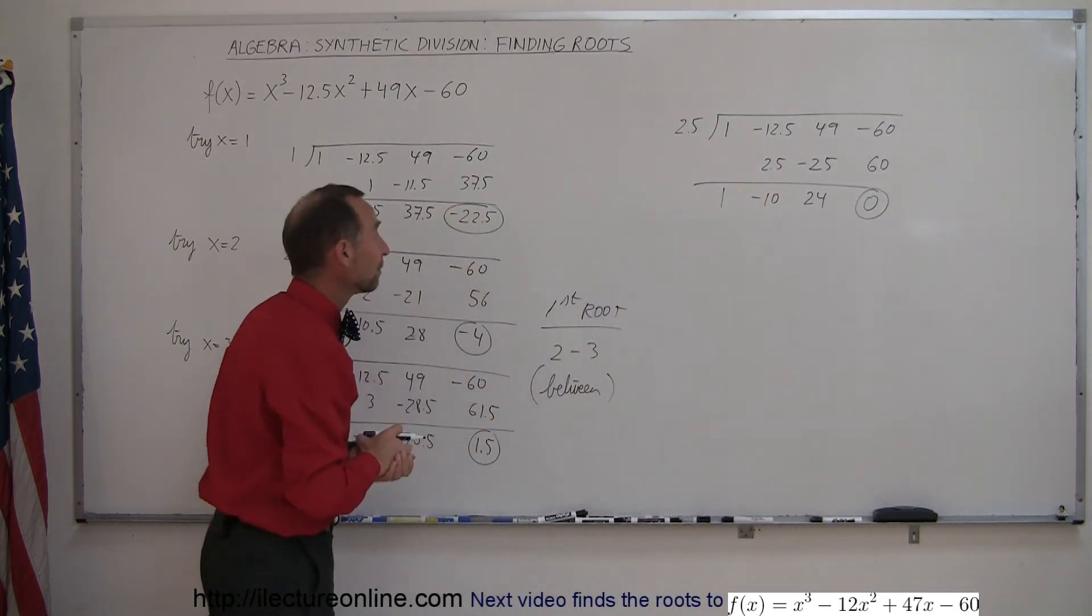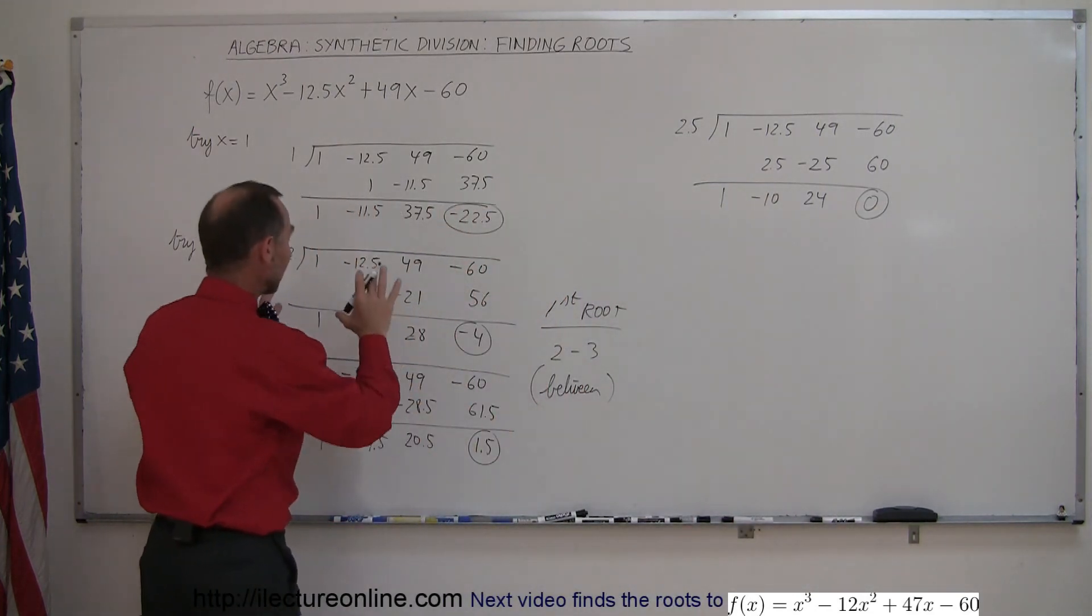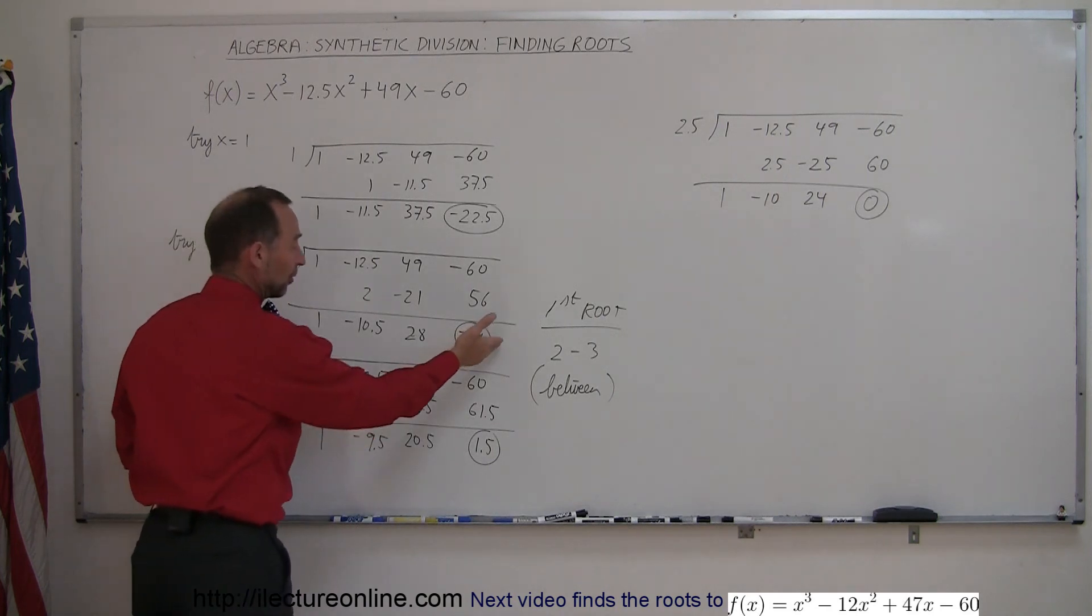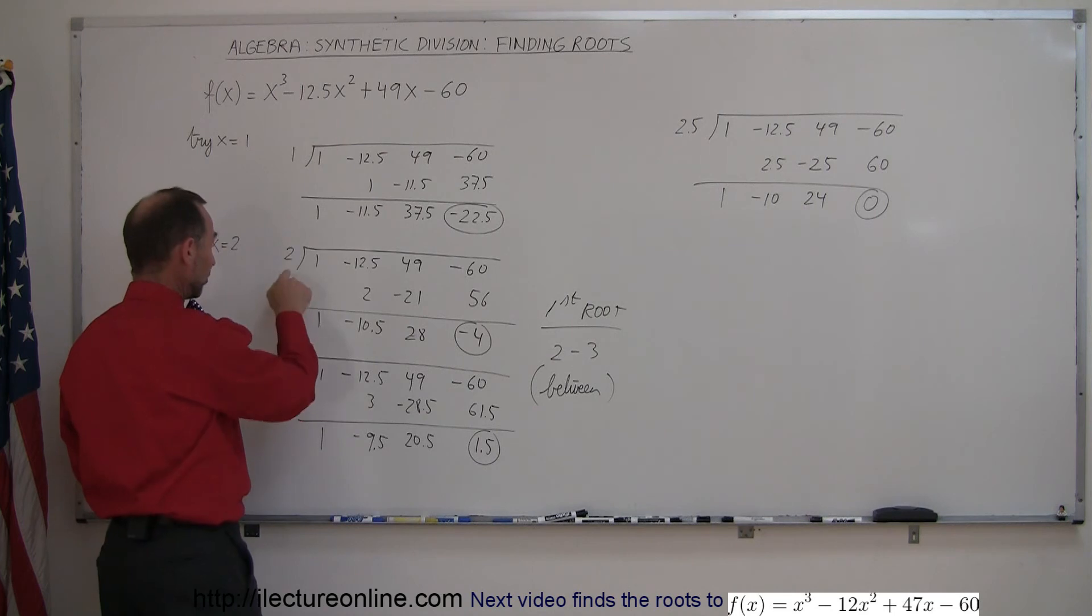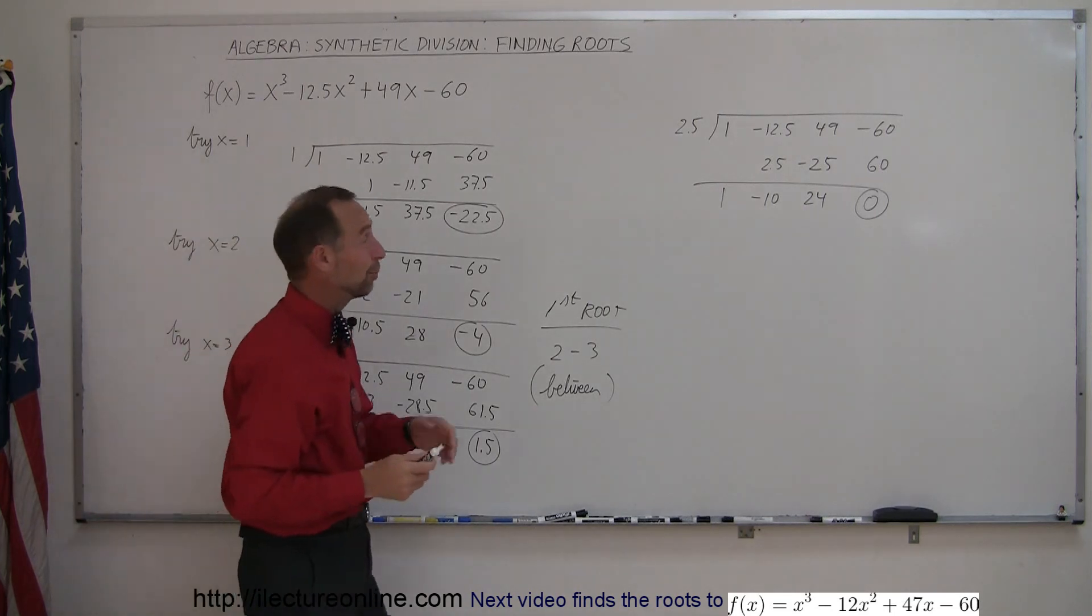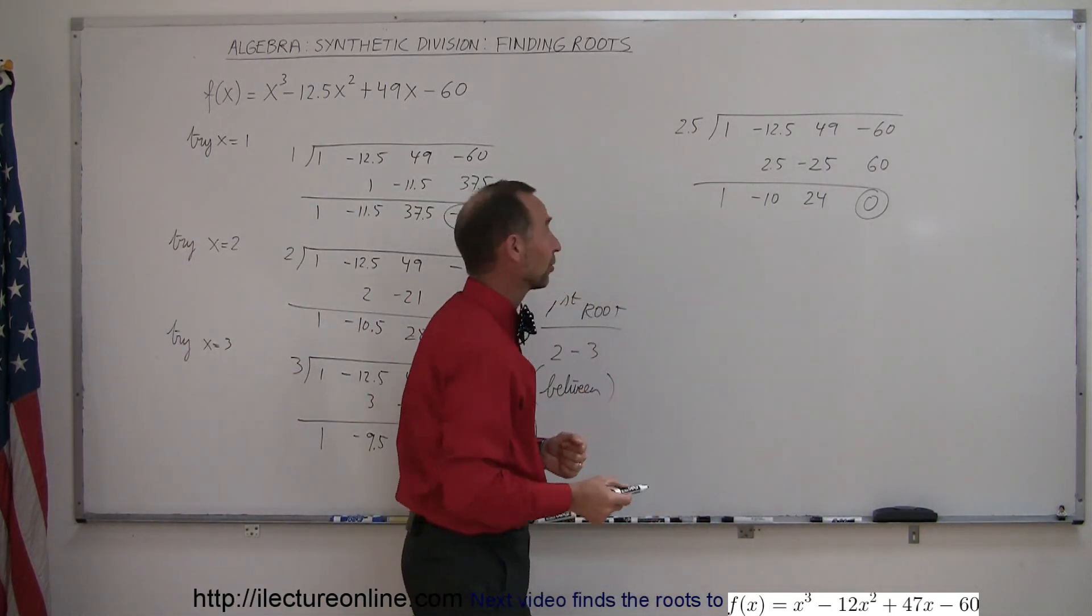I wasn't expecting that, but you can see that by doing a little trying, and notice that this wasn't far enough, this was too far, so you realize the root was somewhere between 2 and 3. I just happened to pick 2.5, and notice that 2.5 is actually one of the roots.